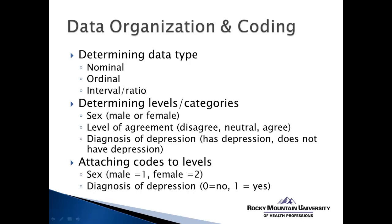Typically when we're dealing with data for non-parametric analysis, it may be coming from a survey of some kind, or it's data that's being collected to represent categories or ranks. As we begin to organize the data we've collected and begin to code it so that we can enter it into SPSS, we need to first determine the data type. Is it nominal, ordinal, or interval ratio data? If you're conducting a survey, it may be a combination of all three types.